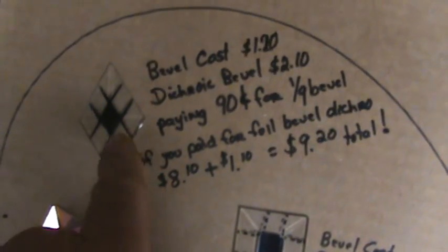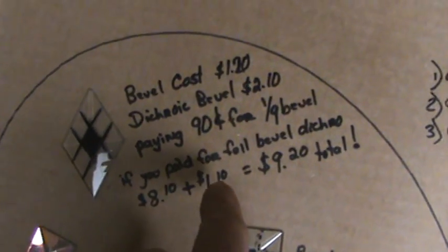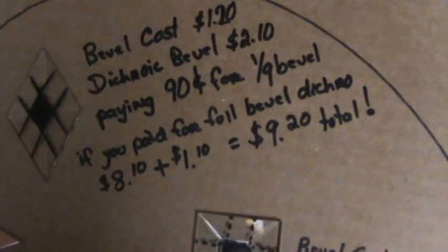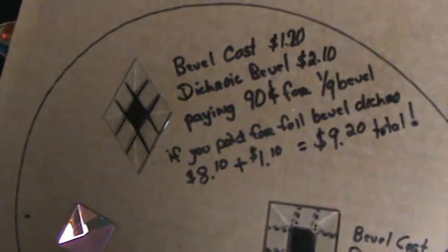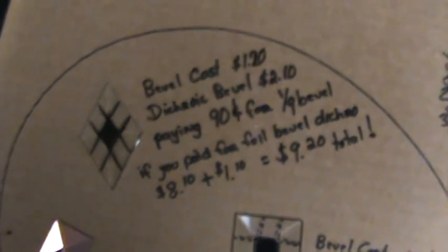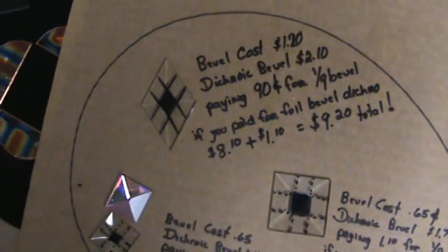If you do your math, nine times ninety is eight dollars and ten cents, and a dollar ten to a dollar twenty for the bevel makes it nine dollars and twenty cents for that bevel. I'm going to show you what I'm doing for much cheaper. It's going to seem more expensive because you're going to get a full bevel instead of some little slice of bread compared to the loaf.